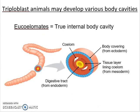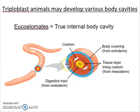The last version of our triploblasts is the eucoelomate — 'eu,' like eukaryotic, stands for 'true.' These organisms have a true internal body cavity filled with fluid. The skin or body covering comes from the ectoderm, and the digestive tract from the endoderm, both formed during gastrulation. The tissue layer lining the body cavity comes exclusively from the mesoderm, which distinguishes it from the pseudocoelomate, where multiple tissue sources form the lining of that internal body cavity.